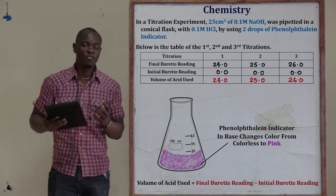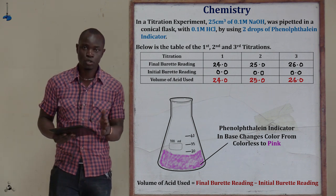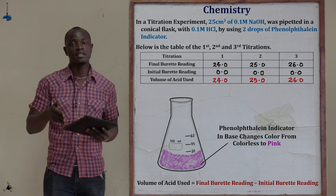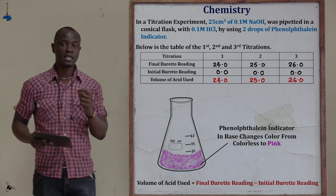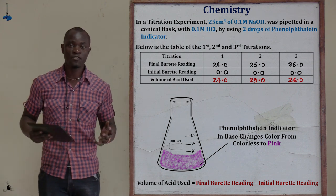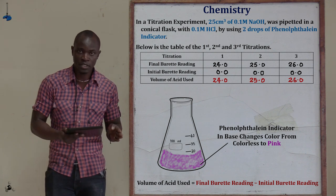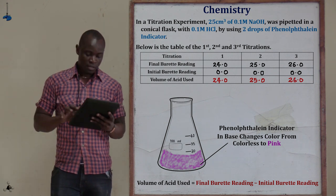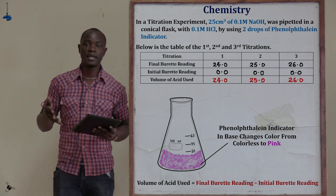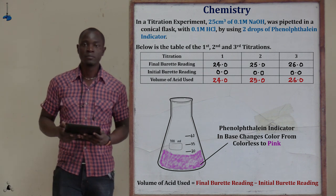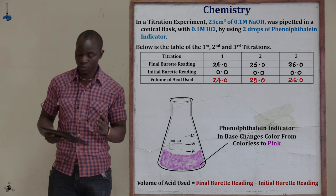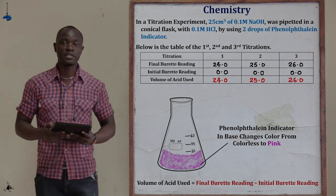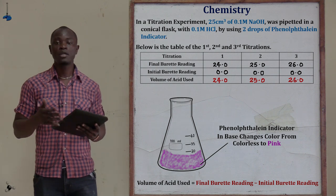To calculate the volume used in each experiment: final burette reading minus initial burette reading gives the volume used. For titration one: 24 minus 0.0 equals 24. For titration two: 25 minus 0.0 equals 25.0. For titration three: 26 minus 0.0 equals 26.0. That is all about filling the table in titration, which is always the first part of the question.